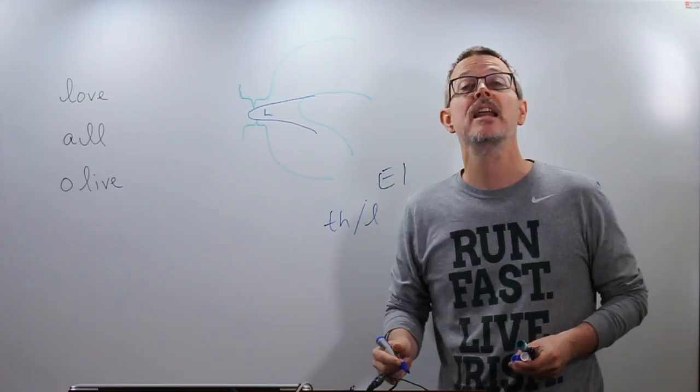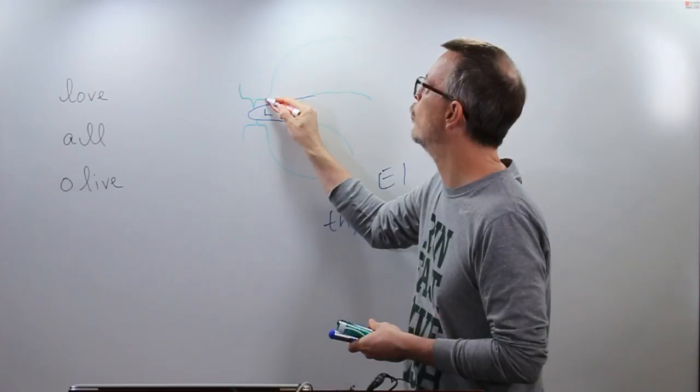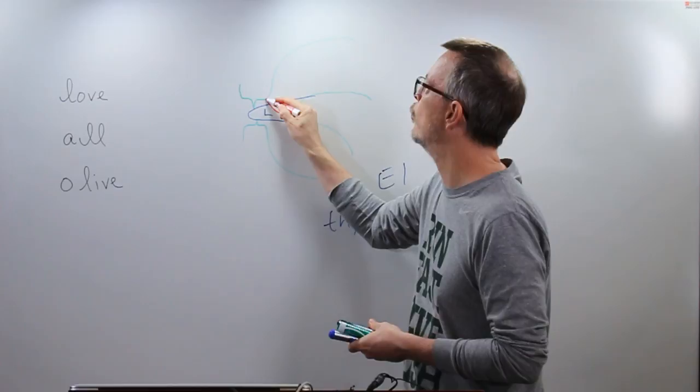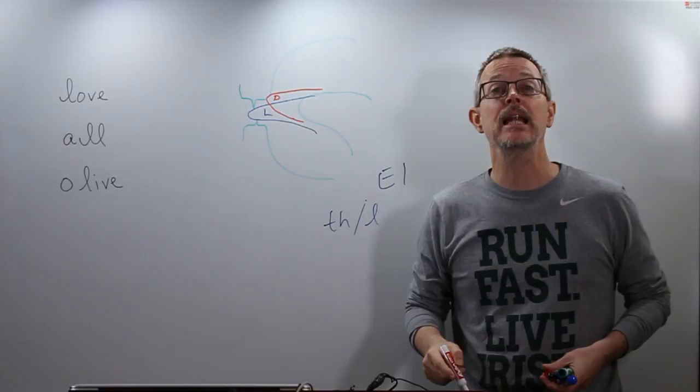So what about the dark L? Now, the dark L, we actually put the tip of the tongue right here. Okay? The tip of the tongue is there. So I'll put a D. So this is the light L. This is the dark L. L, L. And the tip of the tongue is touching right there.